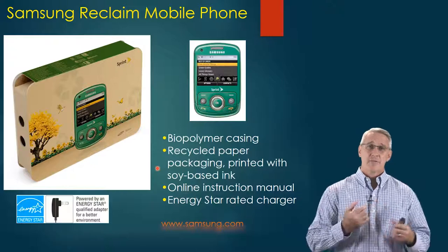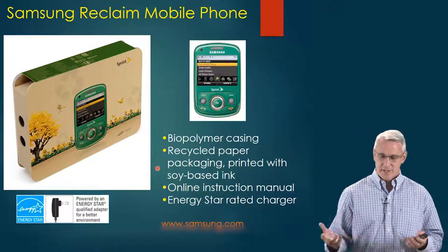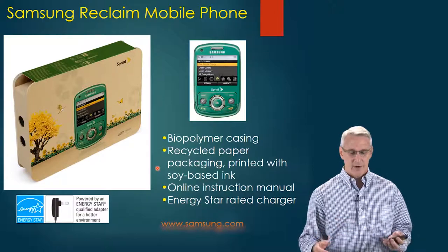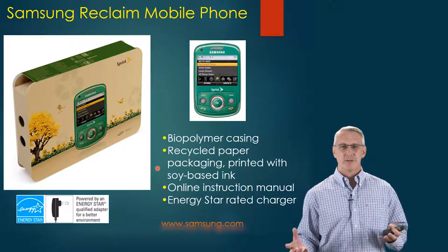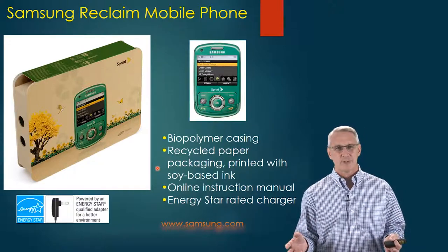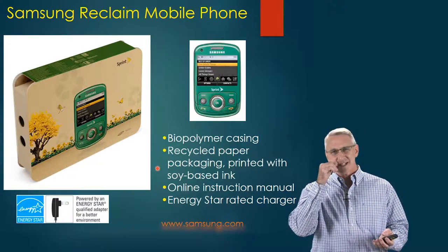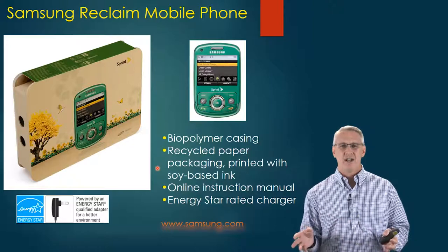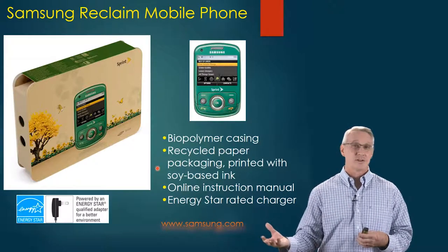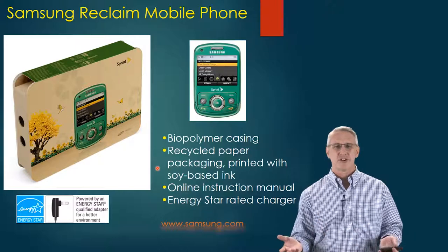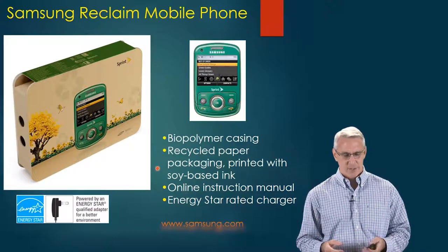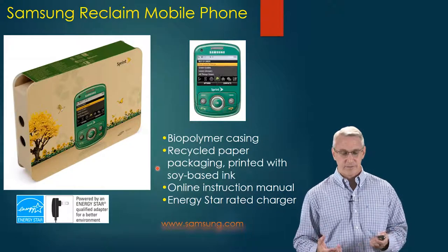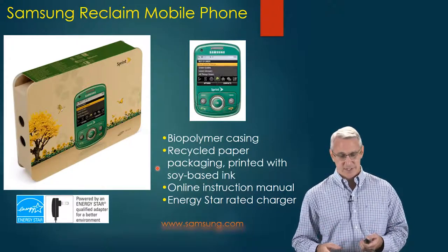Samsung came up with a Reclaim mobile phone — a similar type of thing. This was a mobile phone you could break apart with a biopolymer casing. It comes in recycled paper packaging printed with soy-based ink, which is renewable and non-toxic. It has an online instruction manual — so they're not printing one with it — and it was ENERGY STAR rated for the charger. Overall it was a much lower impact compared to a regular cell phone.